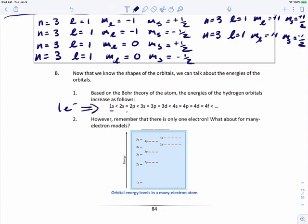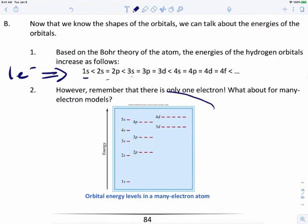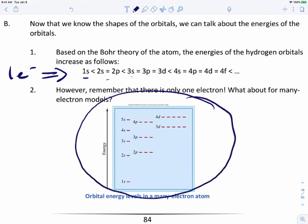If you have more than one electron, this tends to be the pattern that we follow, that we go from 1S to 2S, 2S to 2P, 2P to 3S, 3S to 3P, 3P to 4S, 4S to 3D, 3D to 4P, 4P to 5S, 5S to 4D. So that tends to be the pattern, which is actually what we're going to talk about in the next video.